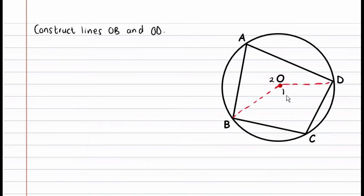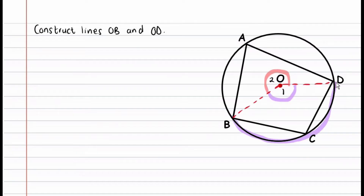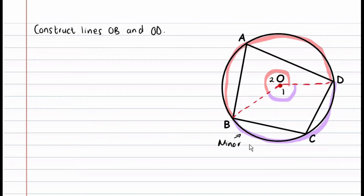Before we prove this theorem, let's understand which arcs exactly support which angles. We have angles at the center and angles at the circumference. Angle O1 is created by lines OB and OD, so arc BD is what supports angle O1. Angle O2 is also created by lines OB and OD, and its supporting arc is also called BD — but these are two different arcs. One is the minor arc BD and the other is the major arc BD.